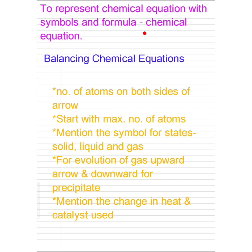To represent a chemical reaction with symbols and formula is called a chemical equation. So first we should know what a chemical equation is — that is, to represent a reaction with symbols and formula. Before writing a chemical equation, there are following points we have to keep in mind.